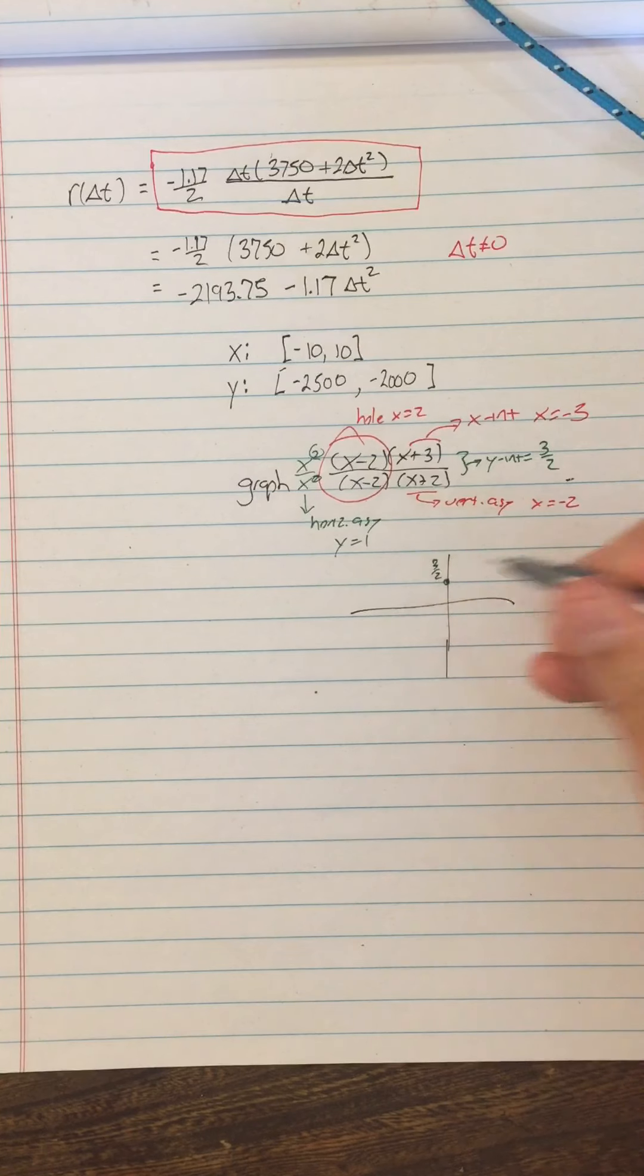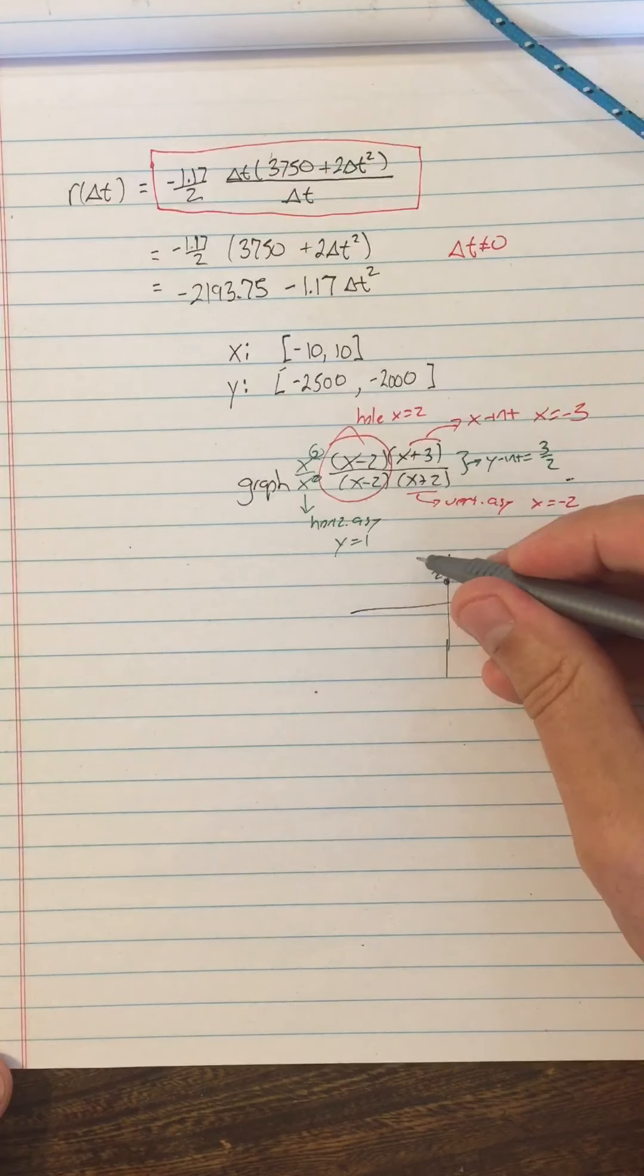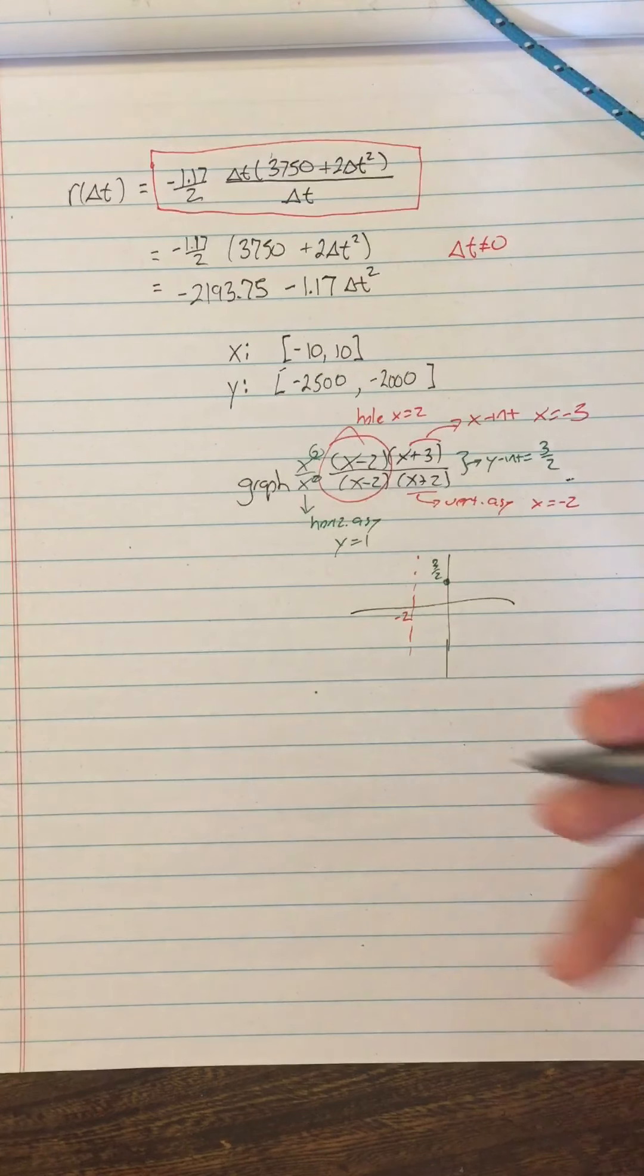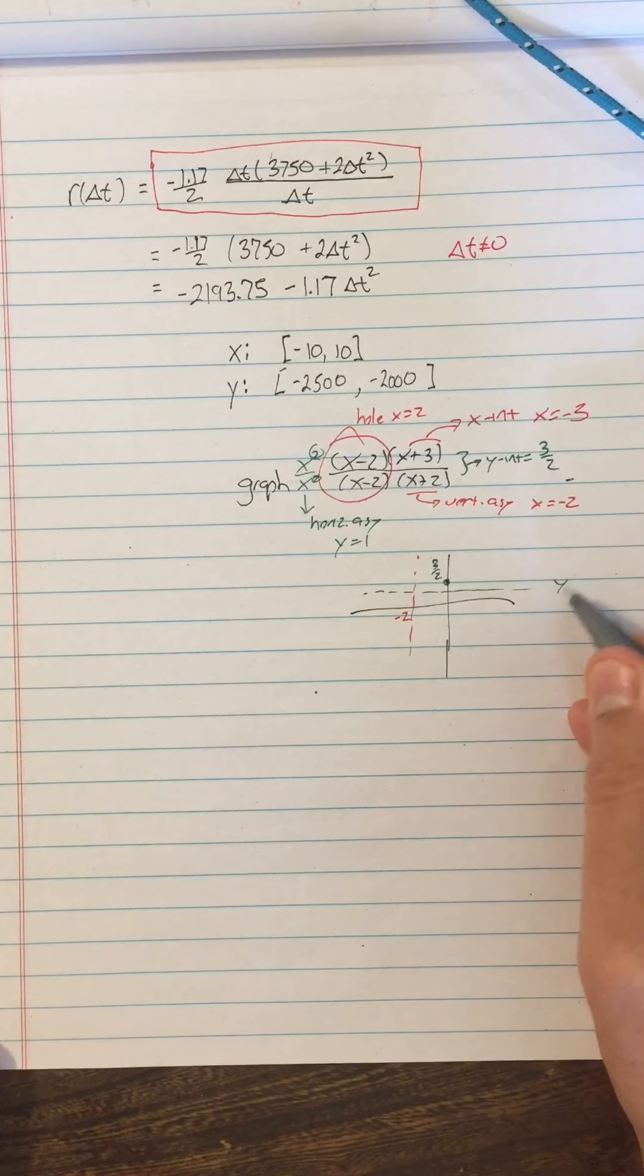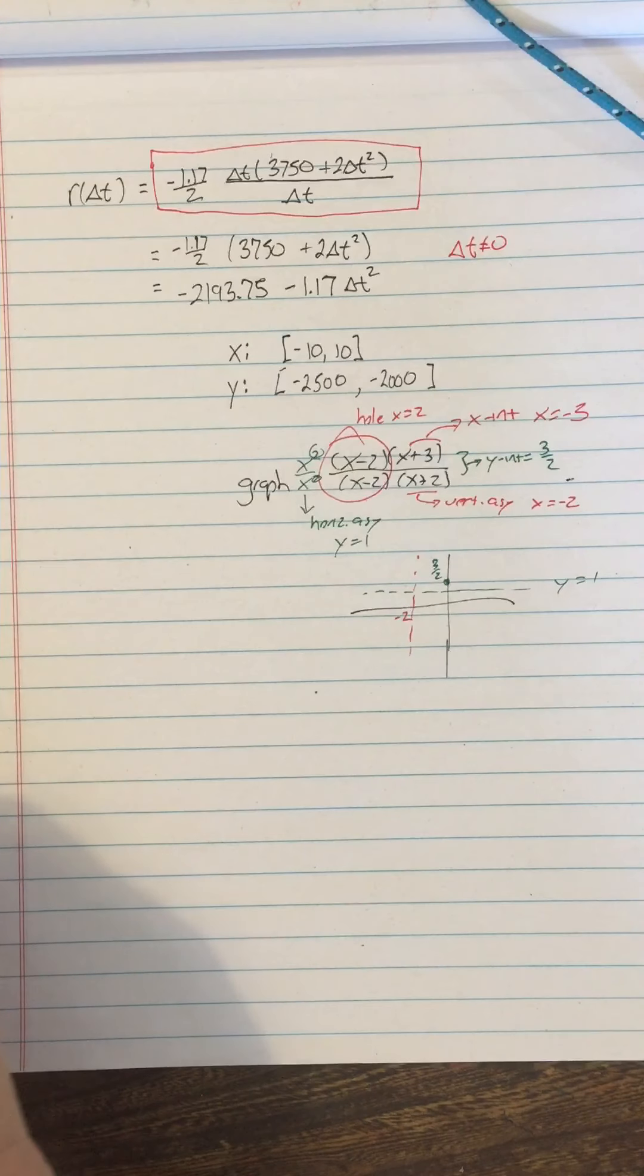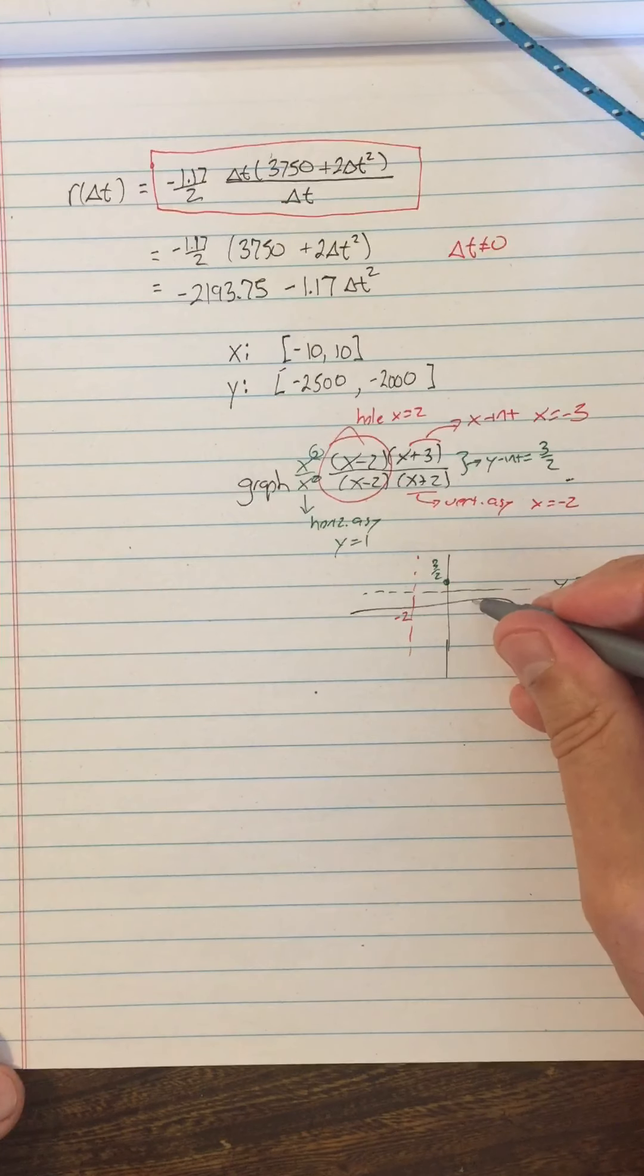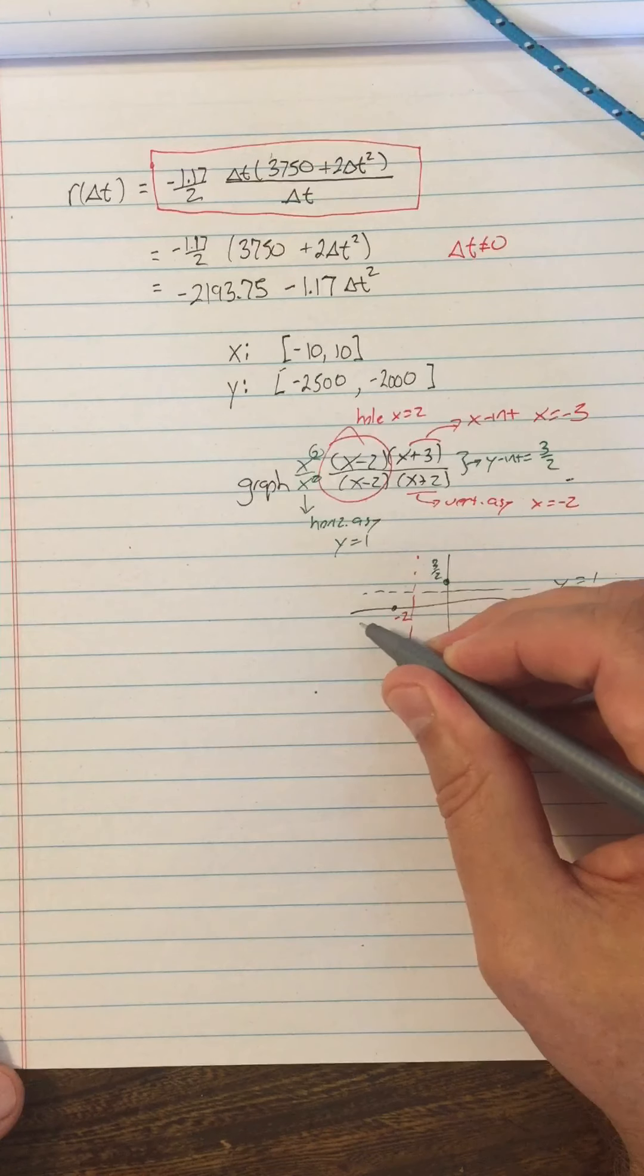So y-intercept is 3 halves, looks like that. Vertical asymptote at negative 2. And horizontal asymptote at 1, that's less than 3 halves, so it looks like this. Y equals 1. And what else? X-intercept at negative 3. So I have x-intercept at negative 3. Let's pick a color for that. So here's our...at negative 3, so that's over here. All right, x-intercept like that.